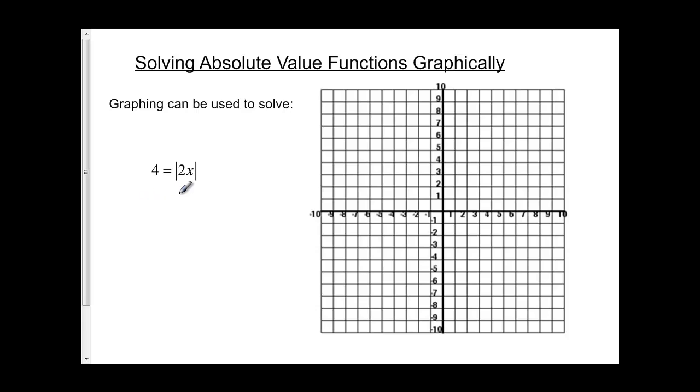The first graph is y equals the absolute value of 2x. The absolute value of 2x starts at (0,0), and I'm going to go up with a slope of 2, so up 2 over 1.